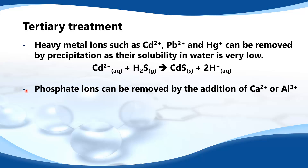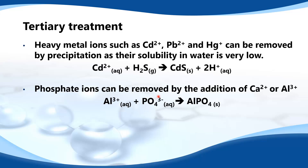Phosphate ions can be removed by the addition of Ca2+ or Al3+ ions. Here we have the Al3+ ions reacting with the phosphate ion to give aluminium phosphate, AlPO4.